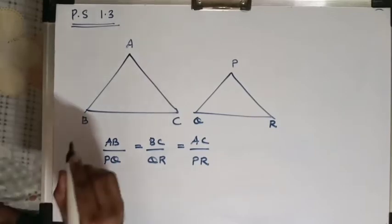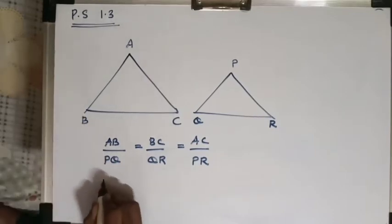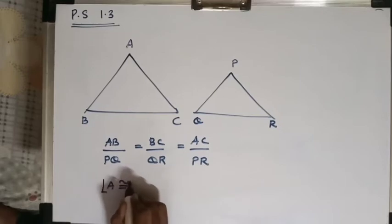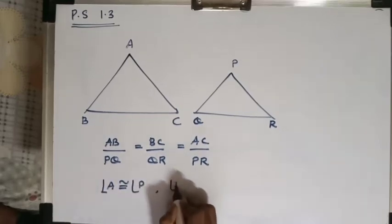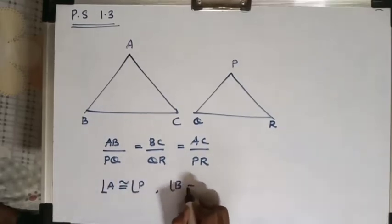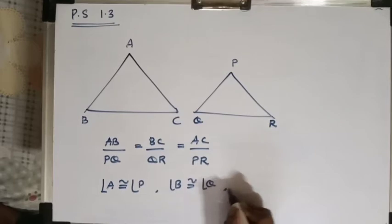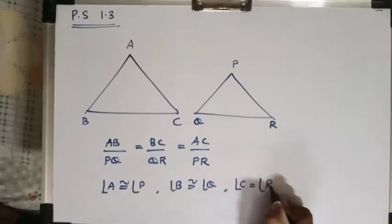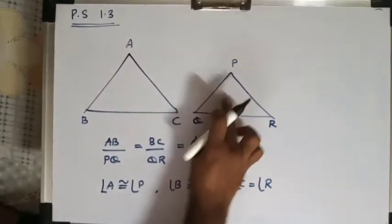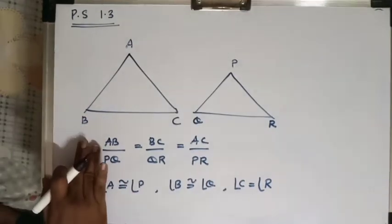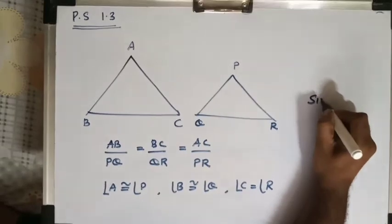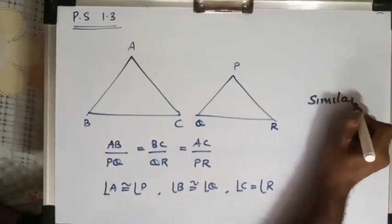And say if the angles of these triangles are congruent — if angle A is congruent to P, angle B is congruent to Q, and angle C is congruent to R — then for any two triangles, if the sides are in proportion and the angles are congruent, the triangles are said to be similar.